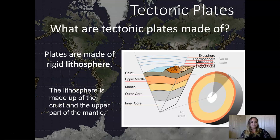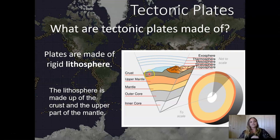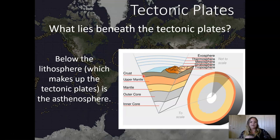What are tectonic plates made of? Remember we talked about the composition of the interior of the Earth — the plates are made up of the lithosphere, which is the crust and upper mantle. The upper mantle is solid and the crust is solid, so the lithosphere is those two components. That is what makes up a tectonic plate, sometimes referred to as lithospheric plates — it's just a more specific name.